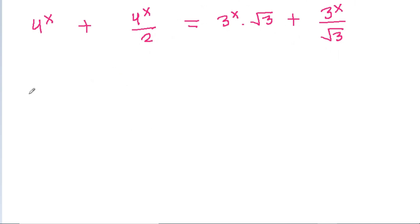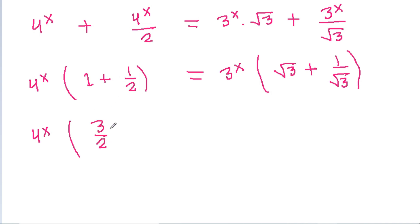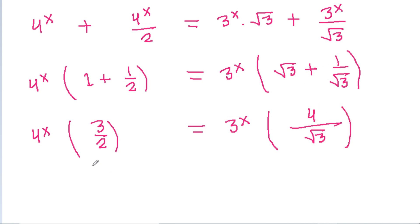If we take 4 power x common, we get 1 plus 1/2. And if we take 3 power x common, we get root 3 plus 1 by root 3. So 4 power x into 3/2 is equal to 3 power x into (root 3 plus 1 by root 3).